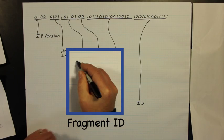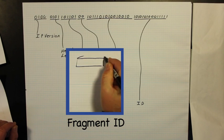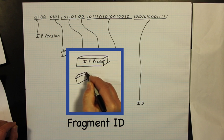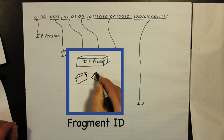The next 16 bits are used to identify the parts, or fragments, of an IP packet that has been broken up in order to pass through a particular network.